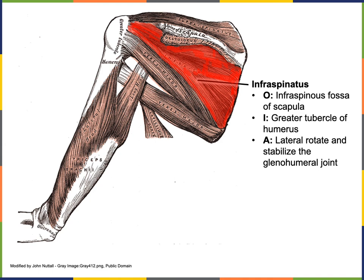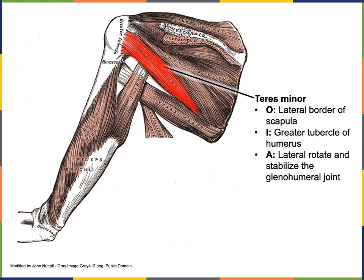The origin of infraspinatus is the infraspinous fossa of the scapula, and its insertion is the greater tubercle of the humerus. The origin of teres minor is the lateral border of the scapula, and its insertion is the greater tubercle, just inferior to the insertion of infraspinatus.